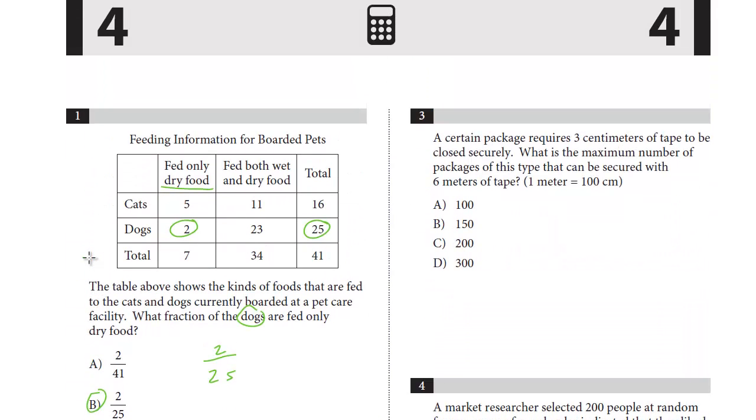Question number 3. A certain package requires 3 centimeters of tape to be closed securely. What's the maximum number of packages of this type that's being secured with 6 meters of tape? 1 meter equals 100 centimeters. So this is a unit conversion. We know to secure a package we need 3 centimeters. And we want to see how many the most we could get with 6 meters. So we've got to convert these both into centimeters. And so 6 meters, they give us the conversion. You don't need a calculator. It's just going to be 600, right? 6 meters, that's going to be 600 centimeters. That's the total amount. Each one requires 3 centimeters. So now we have the same units. We see it's exactly 200.